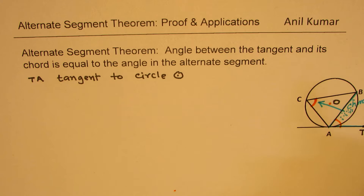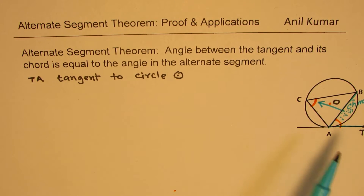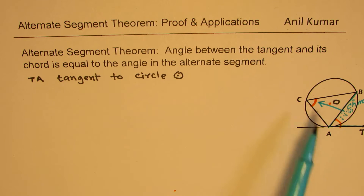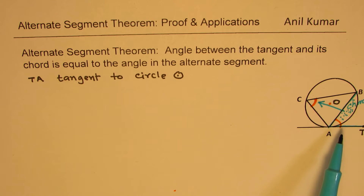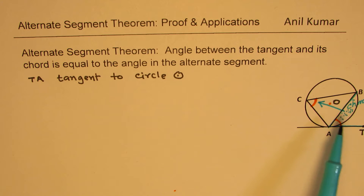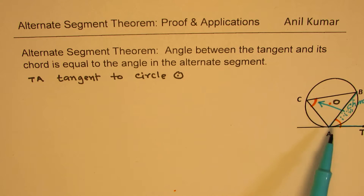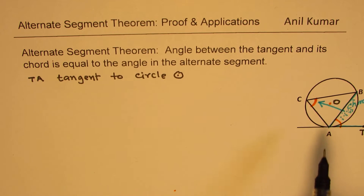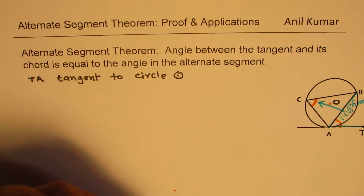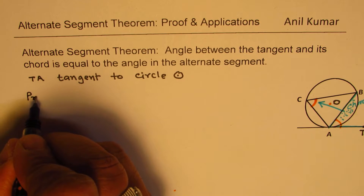So that means within the alternate segment, that is what they mean. The angle will be this with that. An easy way is: see the segment in which the angle is formed, and right across — right opposite to that — which angle is there? That is the angle which should be equal. Now let us see how to prove it. Here is a small proof.